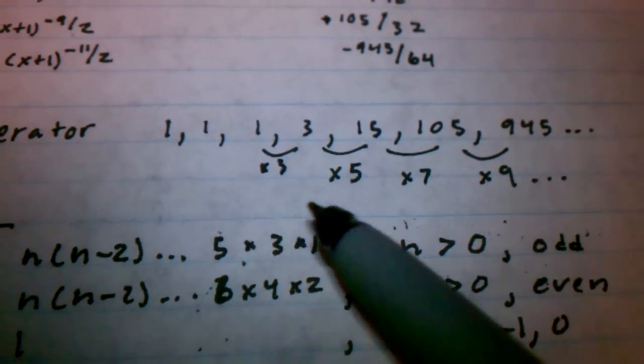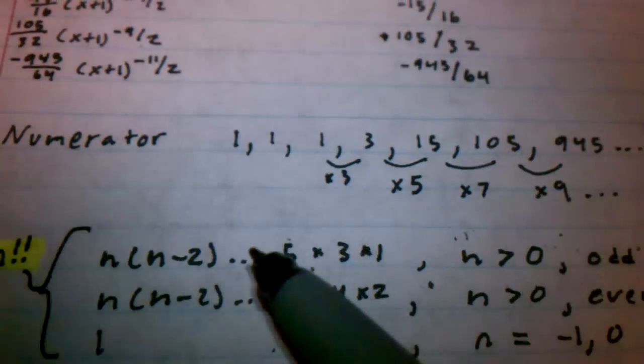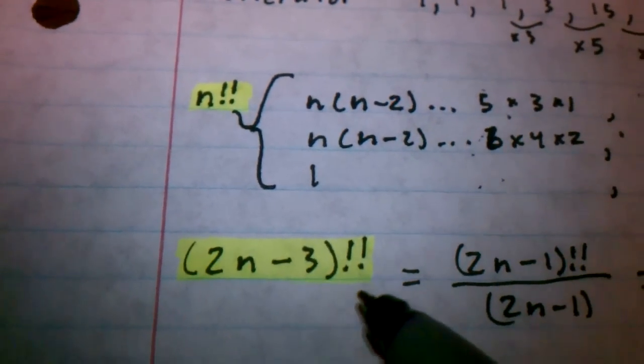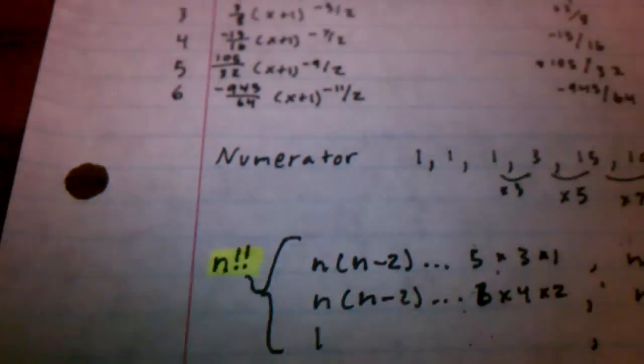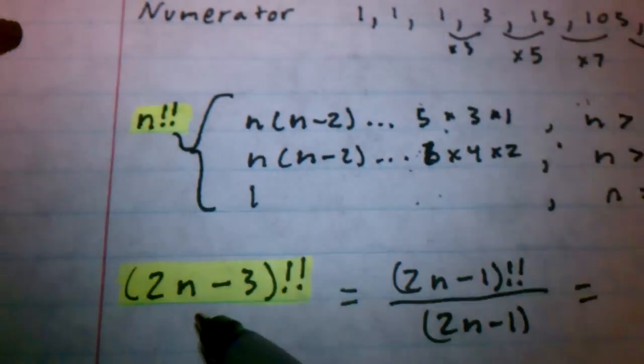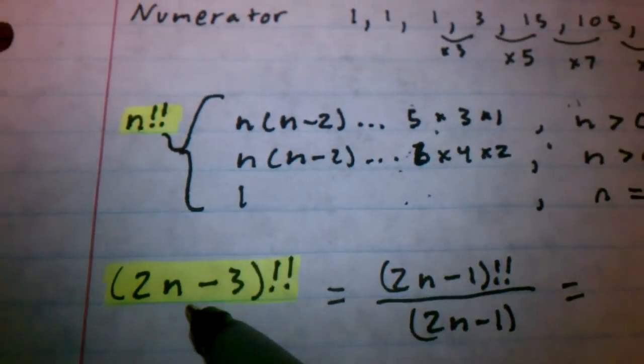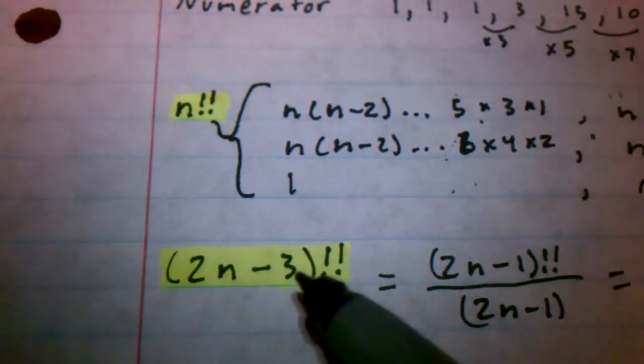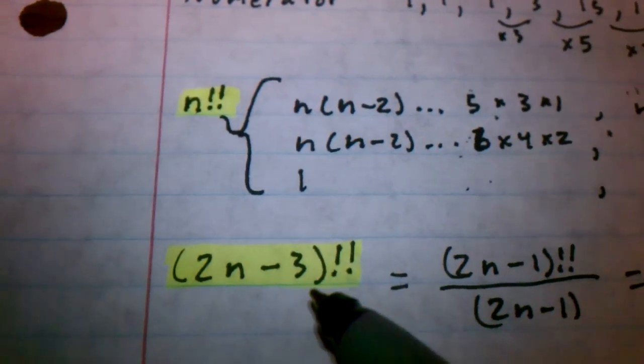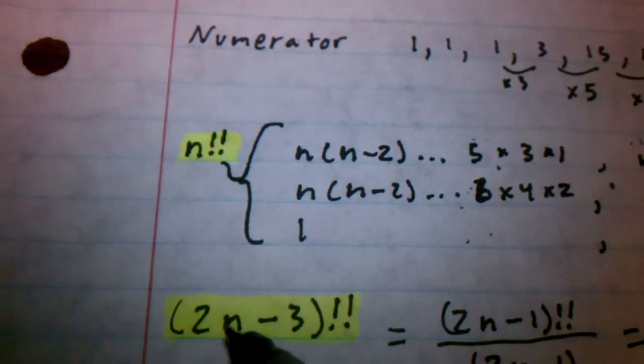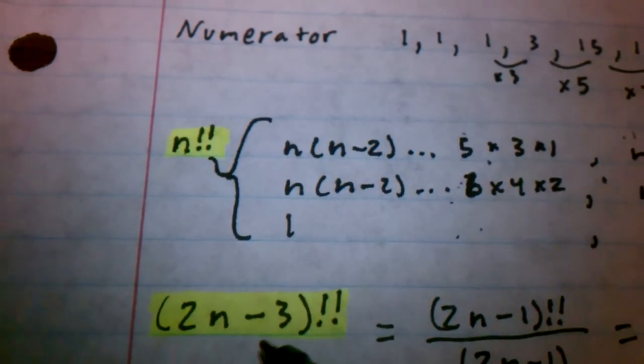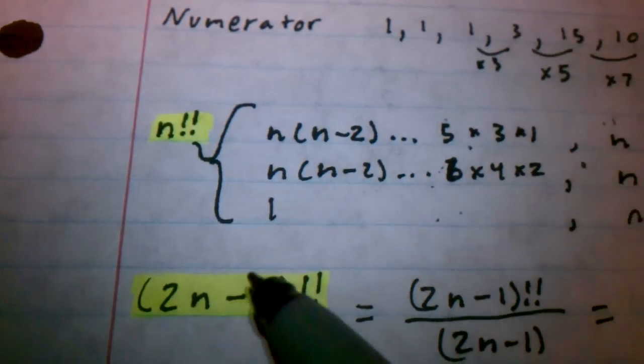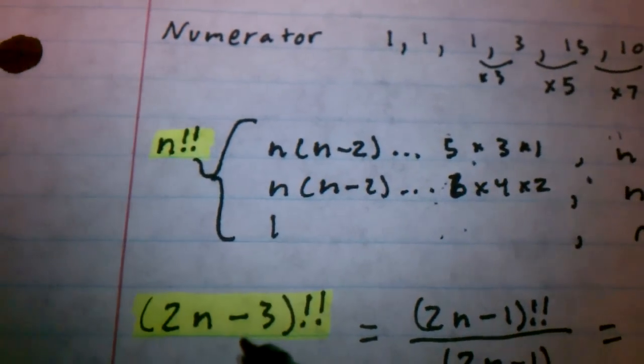So, for these numbers here, what works out is 2n minus 3 double factorial. So, let's plug in some of these values. If we plug in 0, that gives us negative 3. So, we're going to have to rewrite it, as I have here, so we get something that fits all values. If we plug in 1, we get negative 1 factorial, which according to this, gives us 1. If we plug in 2, we get 1 factorial, which is, of course, 1.